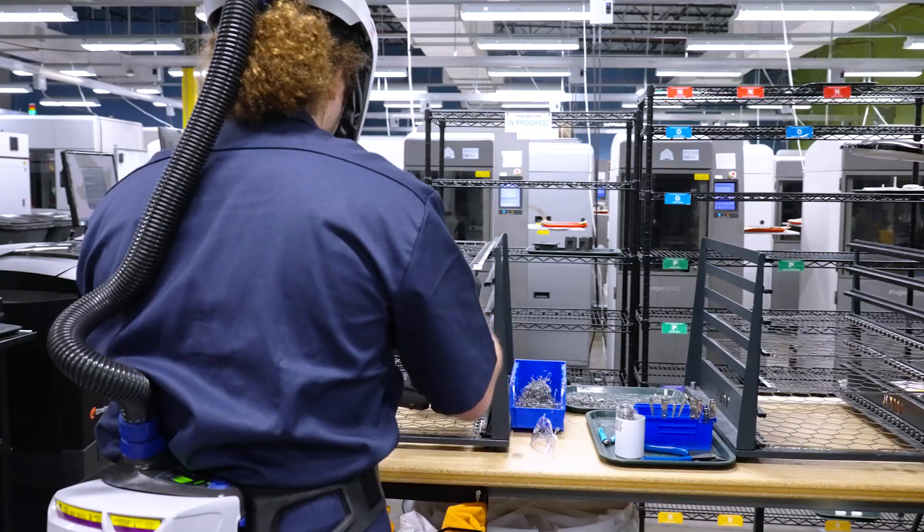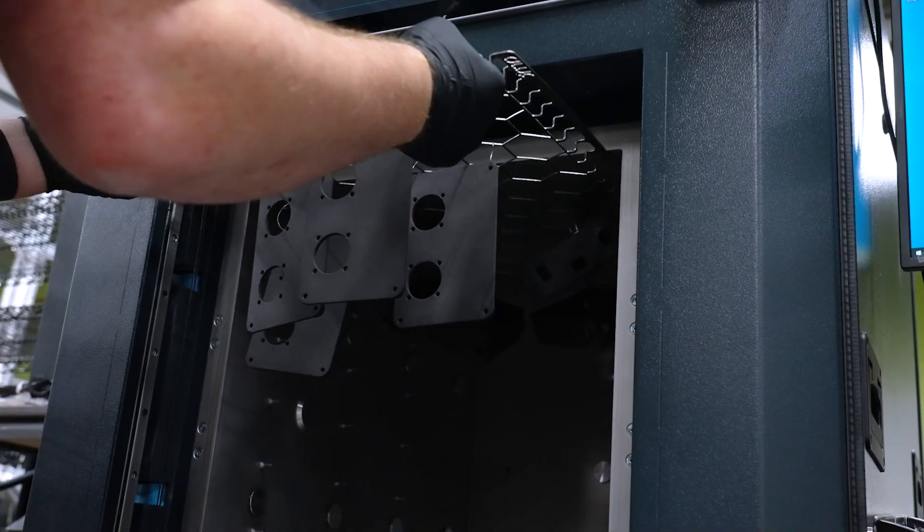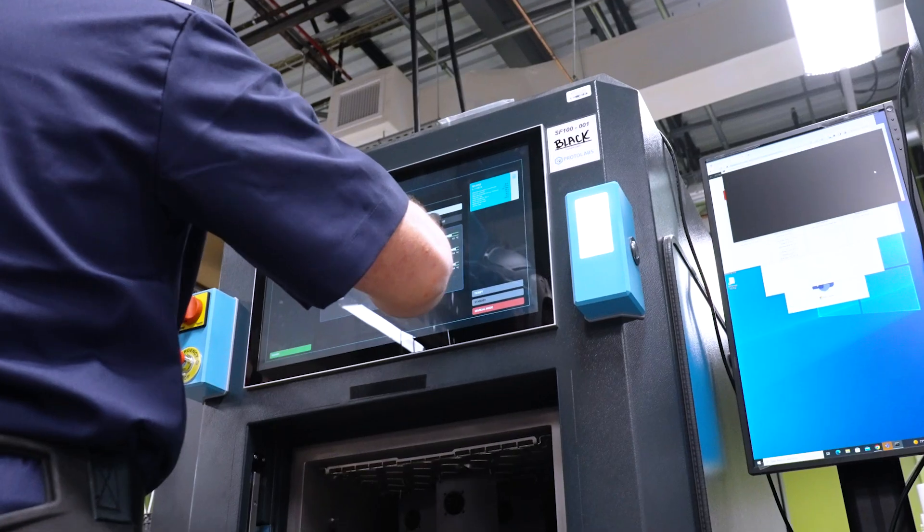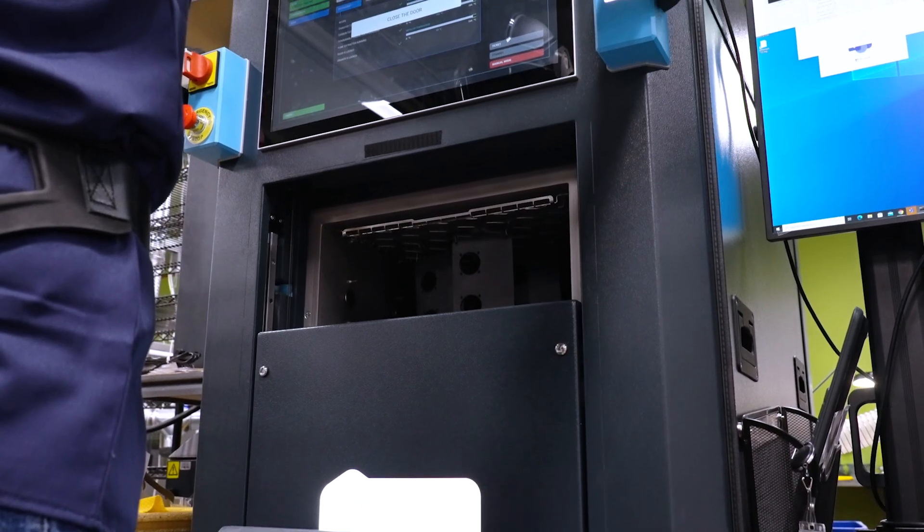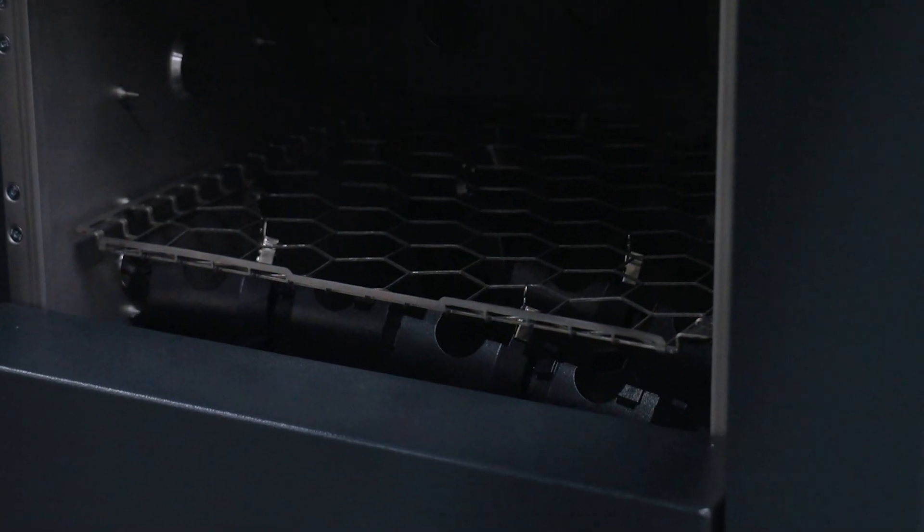We offer vapor smoothing for select 3D printed nylon parts. The vapor smoothing process eliminates rough surfaces and leaves a glossy aesthetic finish on parts.